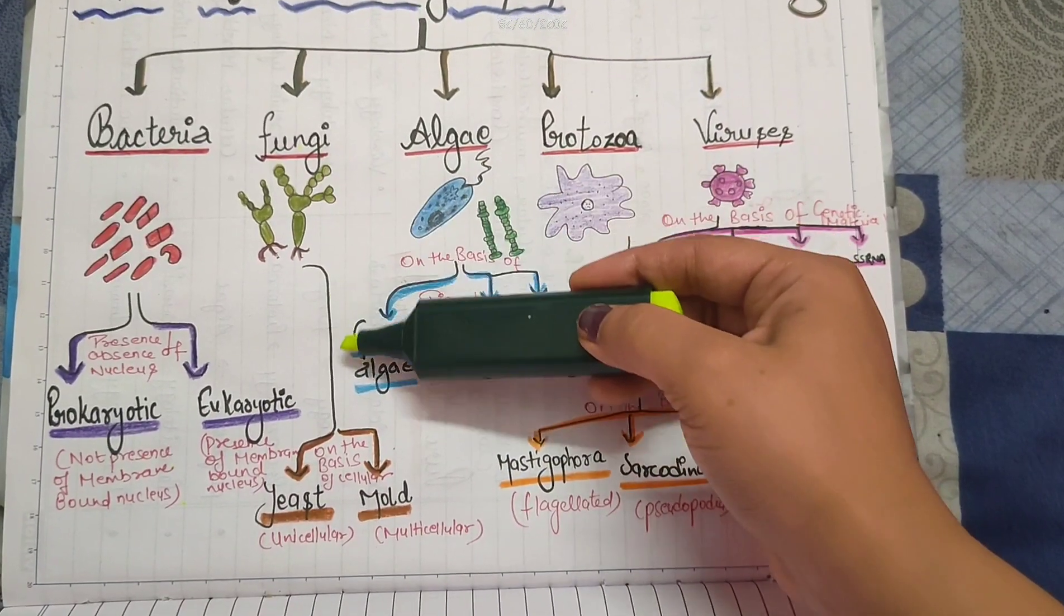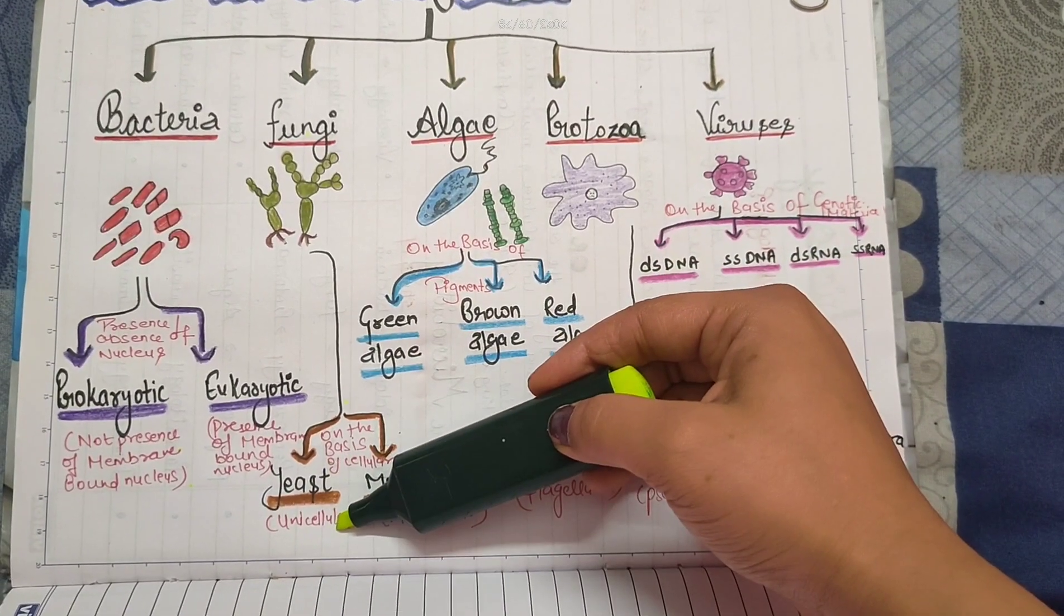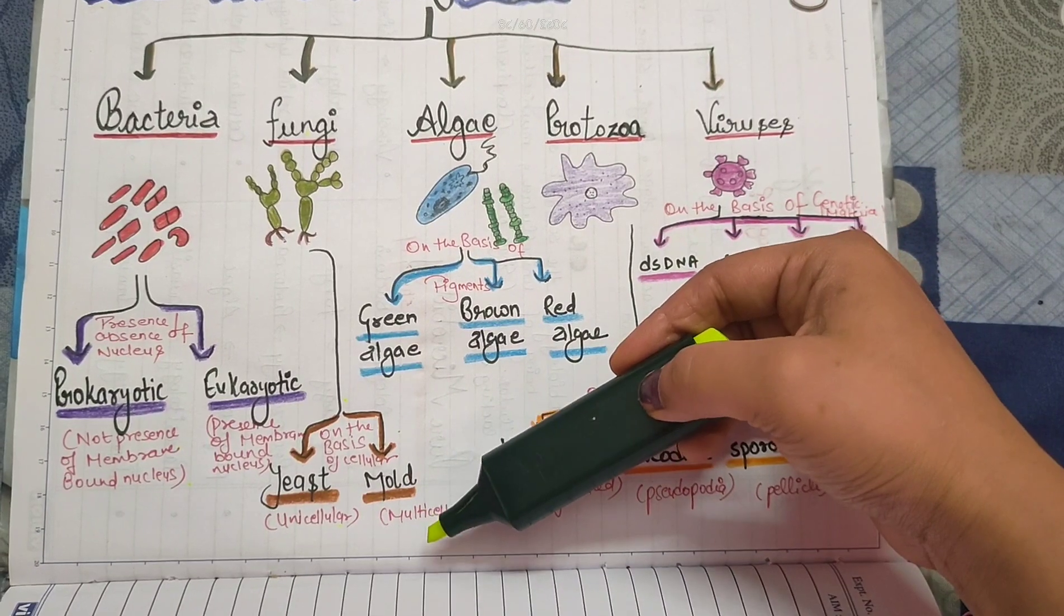Fungi are further classified into yeast and mold on the basis of cells. Yeast are unicellular in nature and mold are multicellular in nature.